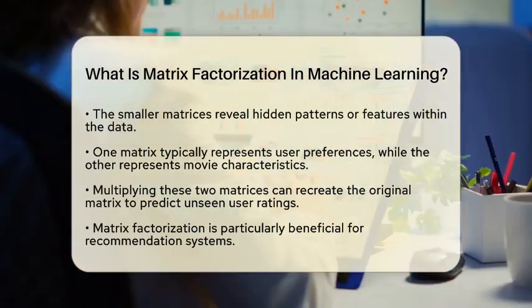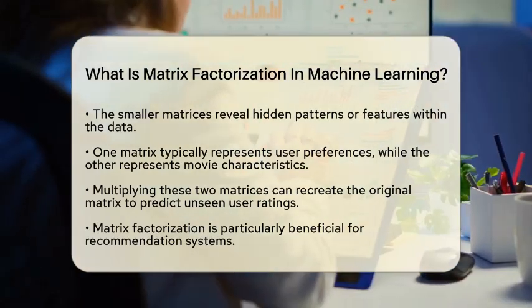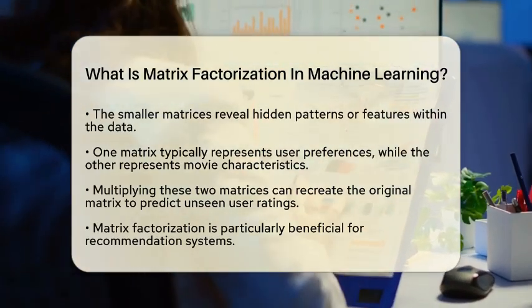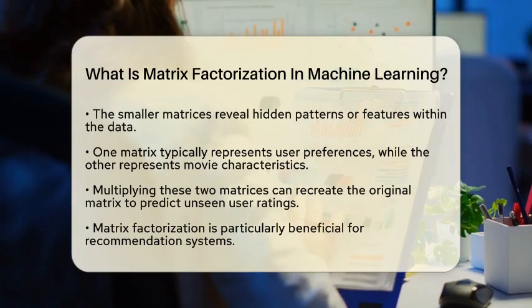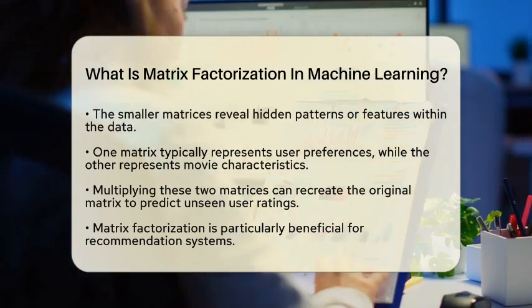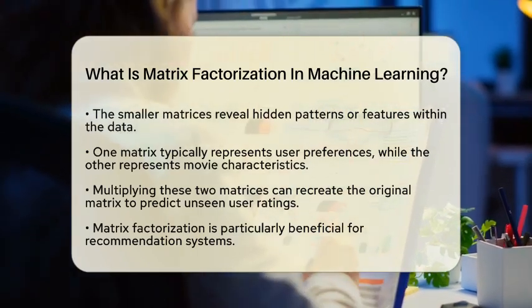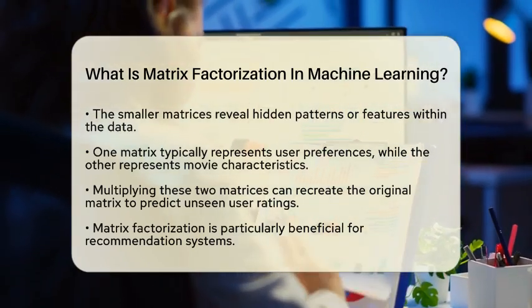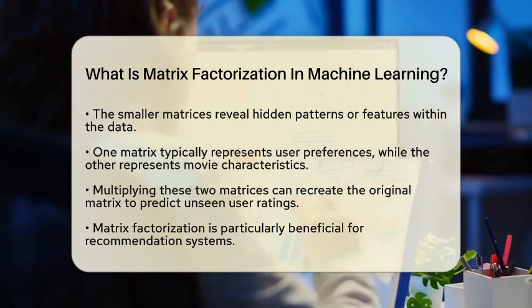When you multiply these two smaller matrices together, they can recreate the original table, allowing the model to predict how a user might rate a movie they have not yet seen.